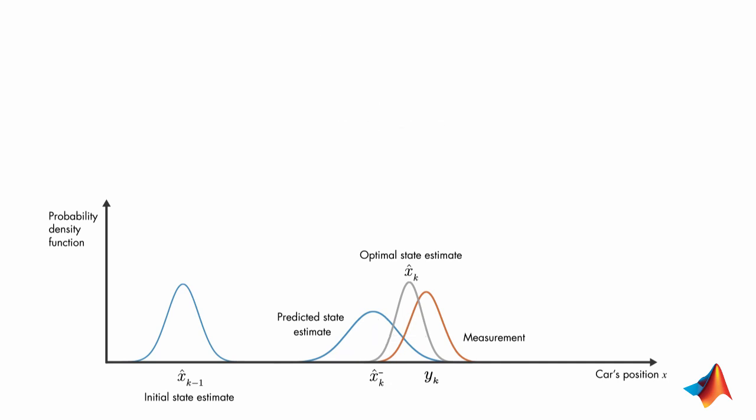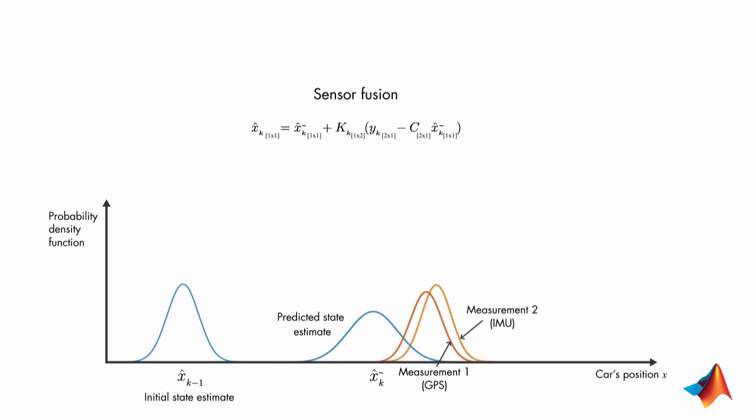If you have two measurements, the dimensions of Y, C, and K matrices will change as shown here. But basically, you will still follow the same logic to compute the optimal state estimate. On the plot, we'll have one more probability density function for the measurement from IMU. And this time, we'll be multiplying three probability density functions together to find the optimal estimate of the car's position.